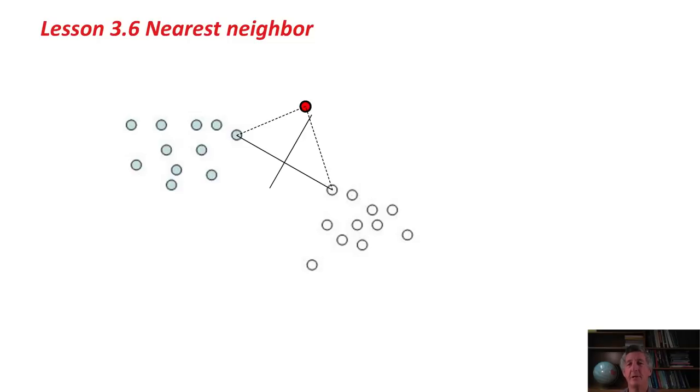In this case, it's the blue class, so we would classify that red point as though it belonged to the blue class. If you think about this, that's implicitly drawing a line between the two clouds of points. It's a straight line here, the perpendicular bisector of the line that joins the two closest points.